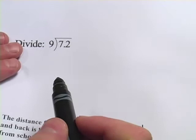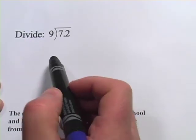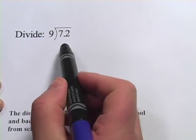Let's try another one. This one says divide 7.2 by 9. If this was divide 72 by 9, you'd probably know that was 8.